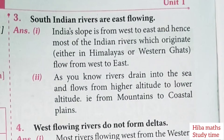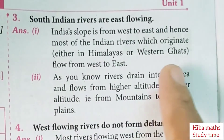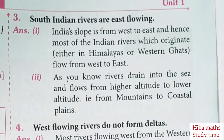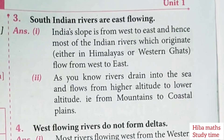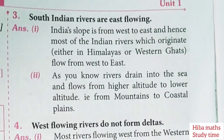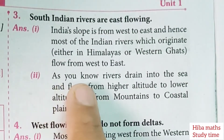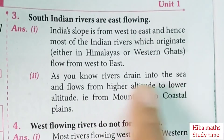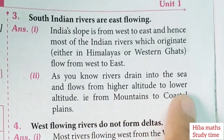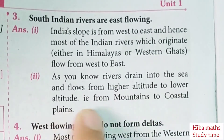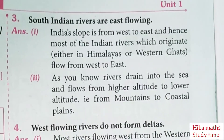Indian rivers originate either from the Himalayas or from the Western Ghats. As you know, rivers drain into the sea and flow from higher altitude to lower altitude — that is, from the mountains to the coastal plains.